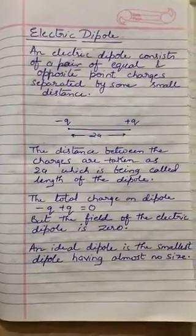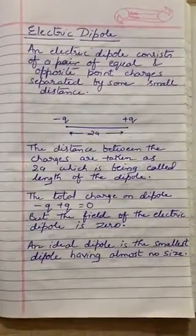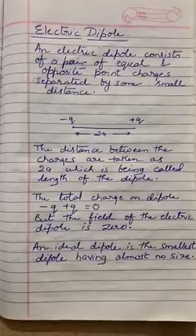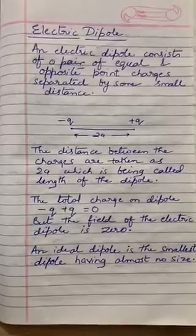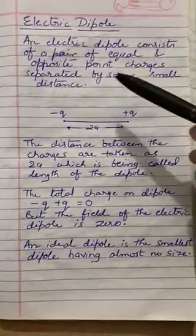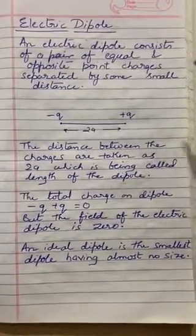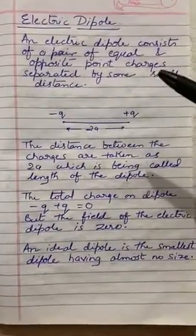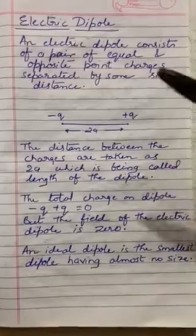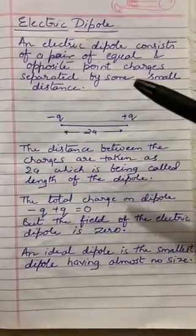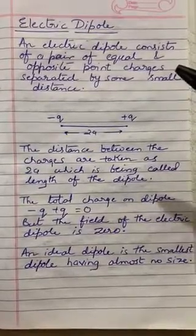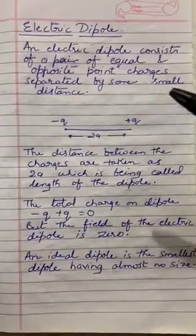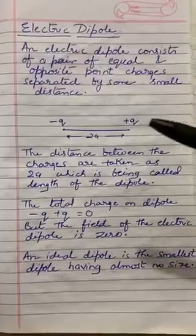Hello everyone. The topic we are going to study today is electric dipole. An electric dipole consists of a pair of equal and opposite point charges separated by some small distance.